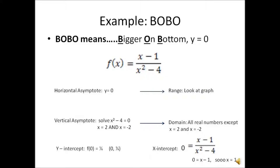To find the range, we're going to have to look at the graph. To find the vertical asymptote, write the equation x squared minus 4 equals 0 — you're setting the denominator of the fraction equal to 0. I solve this by factoring to get x equals 2 and x equals negative 2. This graph has two vertical asymptotes. The domain of the graph is all real numbers except x equals 2 and x equals negative 2.